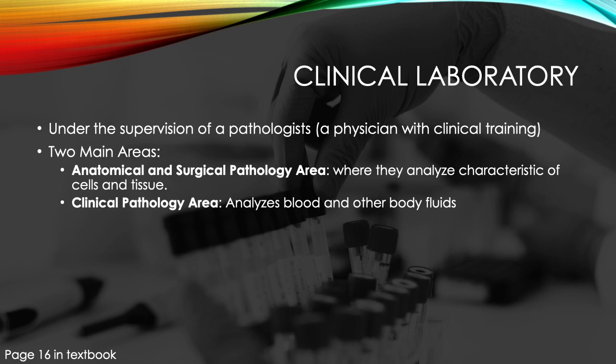Now let's talk about the two main areas: anatomical and surgical pathology, and clinical pathology. Both areas are closely related. To remember anatomical and surgical pathology, think of the word 'anatomical' — it analyzes cells and tissue, just like a person standing in an anatomical position. We are looking at the cells and tissue that make up a body.